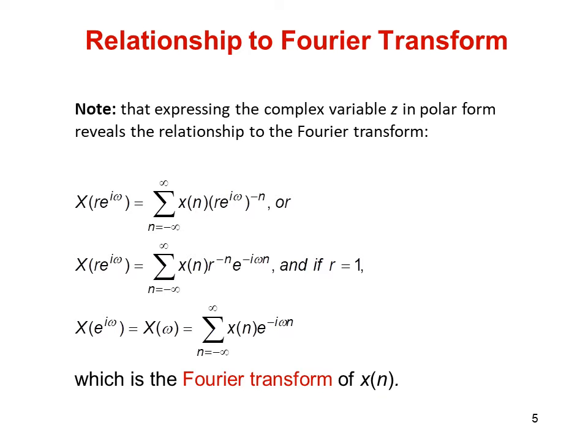Now we derive the relation between the Z and the Fourier transform. By expressing the complex variable Z in polar coordinates, it reveals the relationship between the Fourier transform and the Z-transform. Since Z is a complex number, it can be replaced in its polar form. We replace Z equals R times e to the power i*omega into the Z-transform definition, following which we get the relationship between the Fourier transform and the Z-transform.